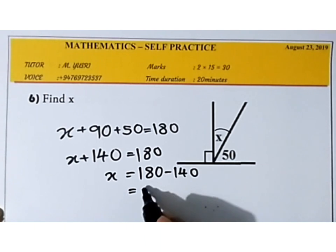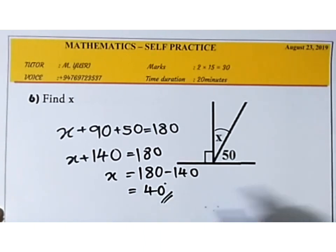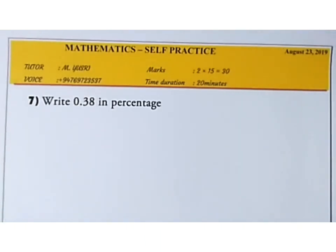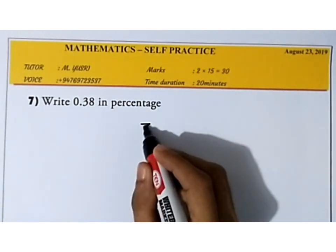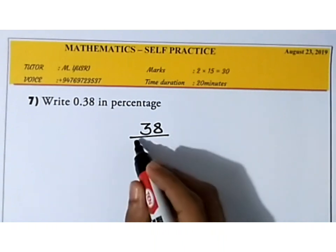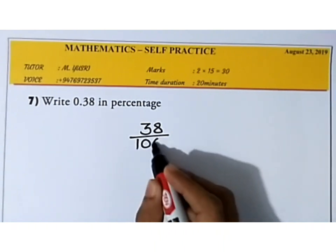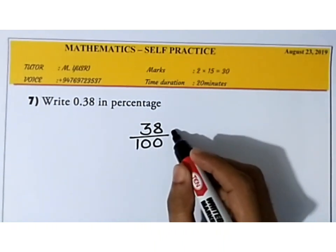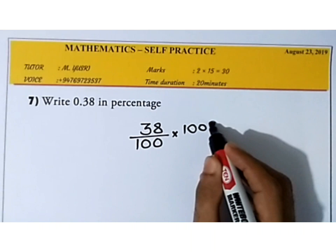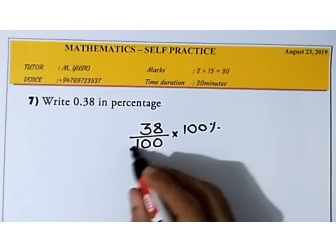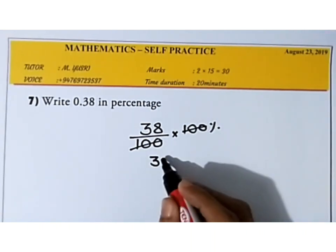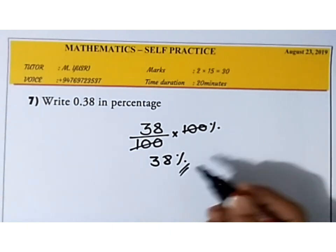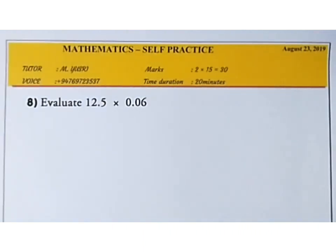To write 0.38 as a percentage: first write it in fraction form — 38/100. Then multiply by 100 to convert to percentage. The 100s cancel, leaving 38%. So 0.38 = 38%.